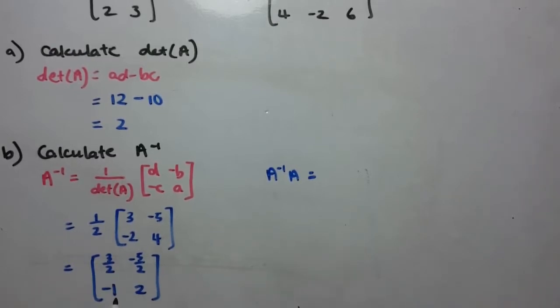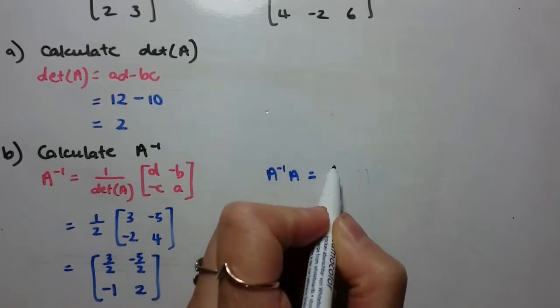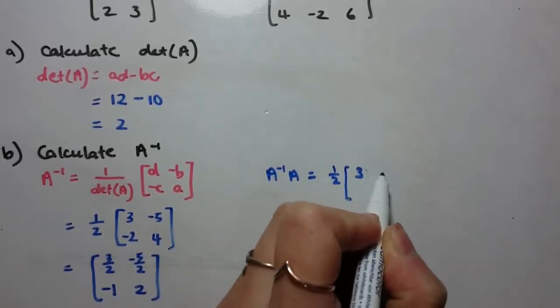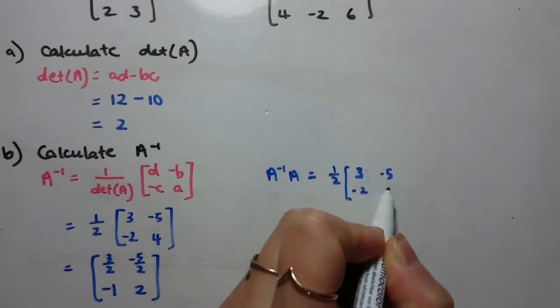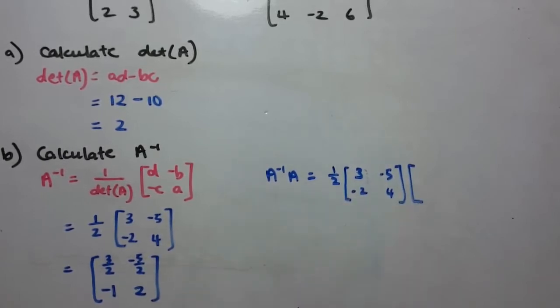So I'm going to grab this, and I'm going to work with the form without all the fractions. So I'm going to use this with the half out the front. This is the inverse, a half times this, I'm going to multiply that by A.